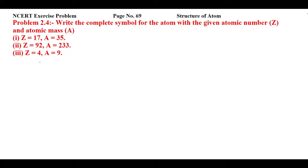Students, this is NCERT exercise problem 2.4 from page number 69 of Structure of Atom. So let's read the statement: write the complete symbol for the atom with the given atomic number Z and atomic mass A.